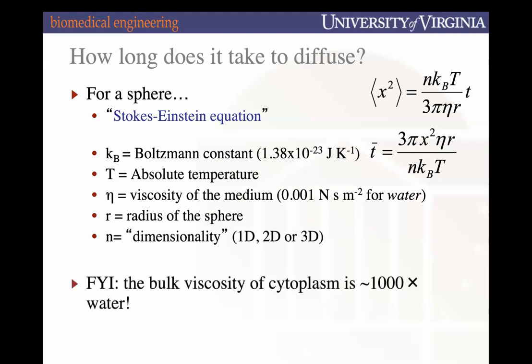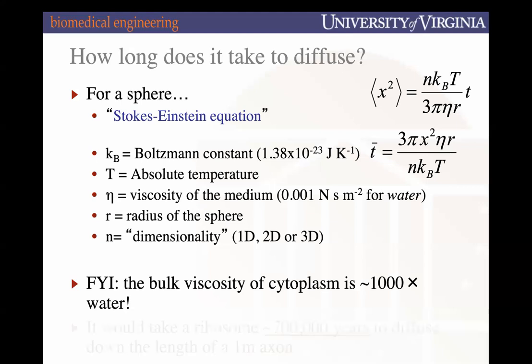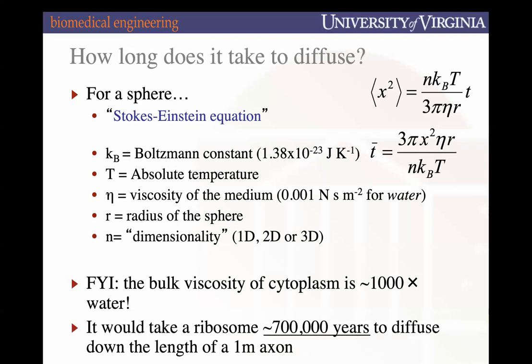If we use this formula to derive diffusion of a protein through cytoplasm — where viscosity is about 1,000 times higher than water — it would take about 700,000 years for a ribosome to diffuse down the length of one axon. Because it would take so long for random diffusion to occur, we need an active process by which molecular motors mediate that transport.